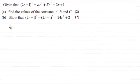Hi there. In this part we're given that (2r + 1)³ is equal to Ar³ + Br² + Cr + 1.